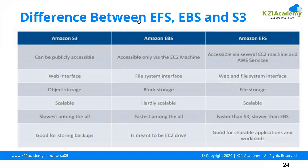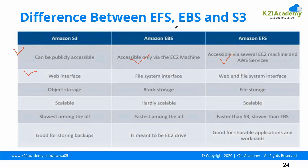The difference between the three types of storages has been briefly explained here. Amazon S3 can be publicly accessible — you do not need a server to access it. Amazon EBS can be accessed only via the EC2 machine. EFS can be accessed via several EC2 machines and AWS services. It provides a web interface as well as a file system interface.